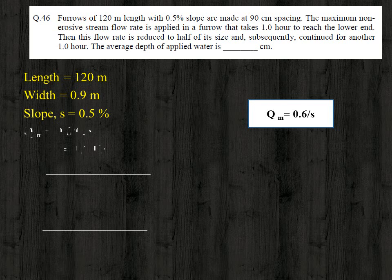Substituting slope S = 0.5, we get the maximum non-erosive stream flow rate Qm = 0.6 / 0.5 = 1.2 liter per second. We now need to find the average depth of applied water.